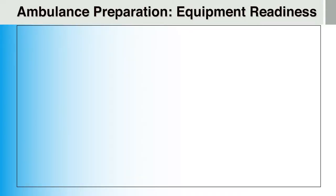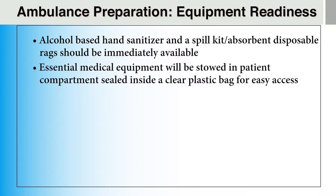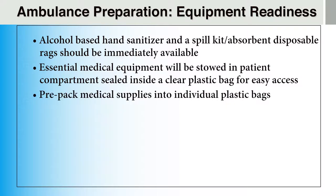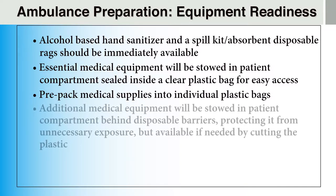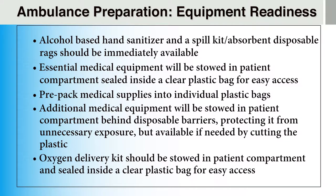When transporting patients under investigation for highly infectious diseases, it is beneficial to prepare the necessary equipment prior to any patient contact. Alcohol-based hand sanitizer and a spill kit or absorbent disposable rags should be kept immediately available. Essential medical equipment should be stowed in the patient compartment and sealed inside a clear plastic bag for easy access. Providers should prepack medical supplies into individual plastic bags with sliding closures. Additional medical equipment should be stowed behind the impermeable barriers, available if needed by cutting through the plastic. Oxygen delivery kits should also be sealed in a clear plastic bag, and services may consider using a manual disposable suction unit.